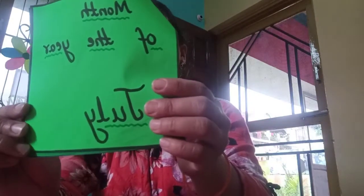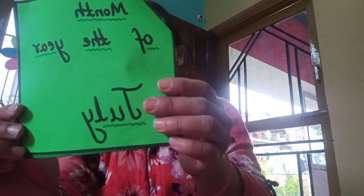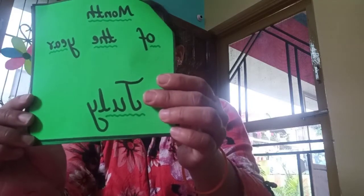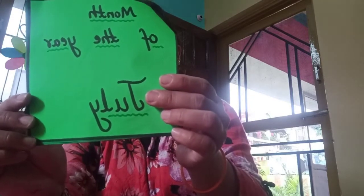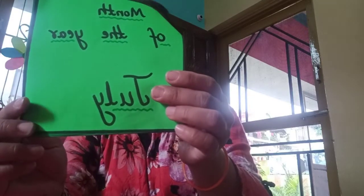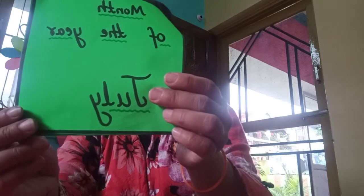Next one is month of the year. Month of the year is July. J-U-L-Y, July. Month of the year is July.